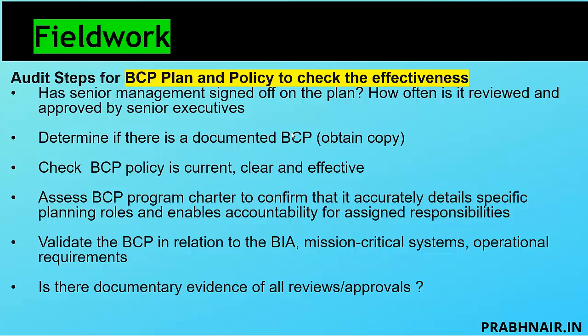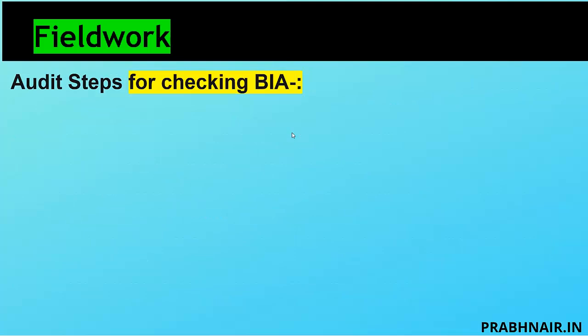In BCP, the most important element is the BIA. BIA is all about what needs to be restored and how, because it helps me prioritize. It is not possible to protect or restore everything in the case of a disaster, so we need to prioritize. BIA is the heart and brain of BCP.